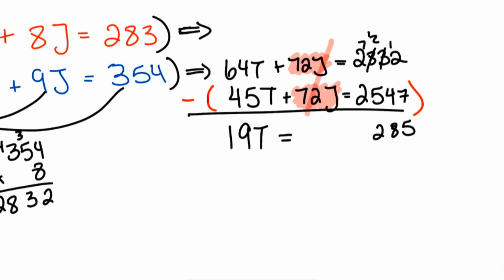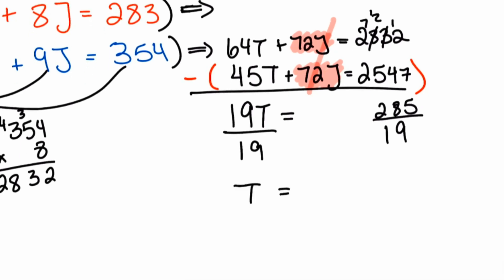And so we'll divide both sides by 19. And then that'll give us T equals what? So to understand what number we might want to use to guess, I'm going to take a look here and say, if I wanted to just use a simple number, 19 times what could get us close to 285?